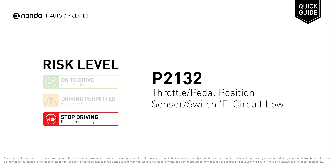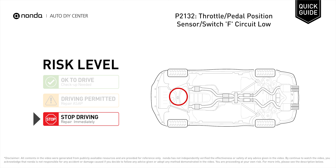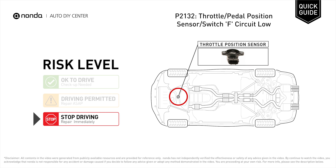P2132 is a diagnostic trouble code for throttle or pedal position sensor or switch F-circuit low. Under this circumstance, stop driving and repair your vehicle immediately. It indicates that the vehicle's onboard computer has detected low voltage in the throttle position sensor.